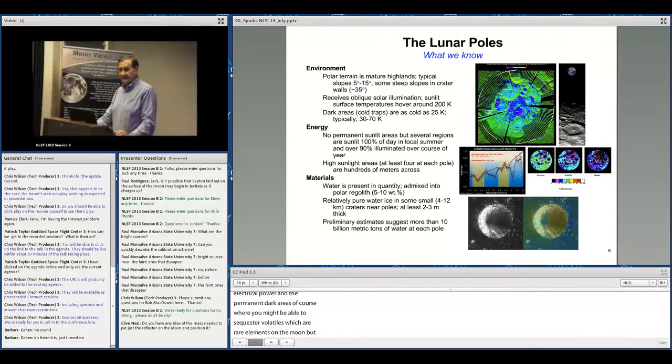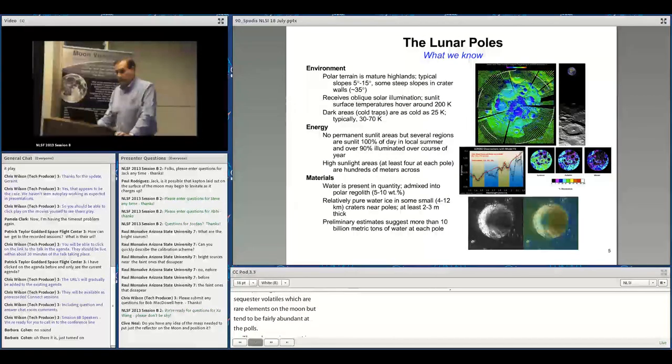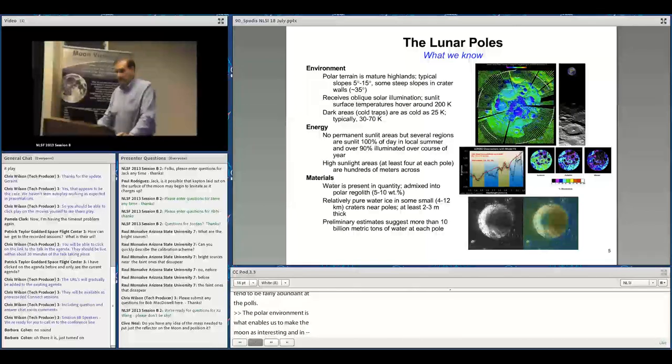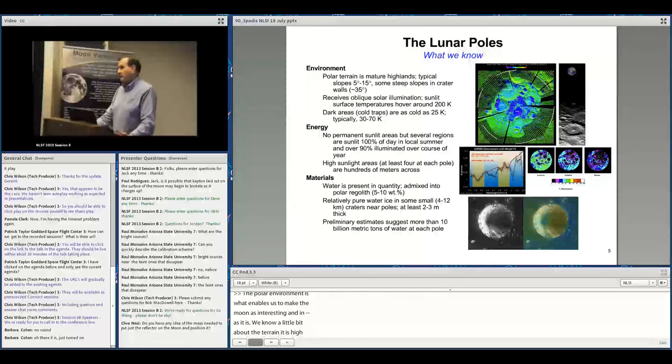We know quite a bit about the poles. The terrain is mature highland surface with average slopes between 5 and 15 degrees, though some areas like fresh crater walls can be as steep as 35 degrees. We've been to similar terrains before, both robotically and with people.